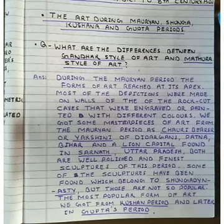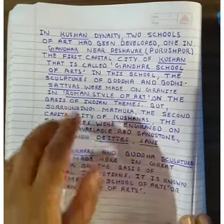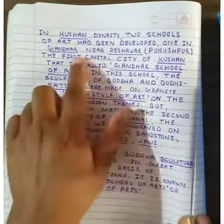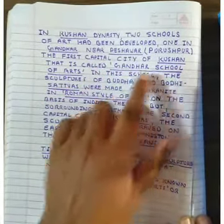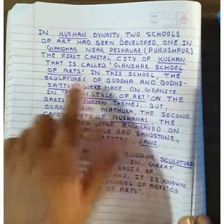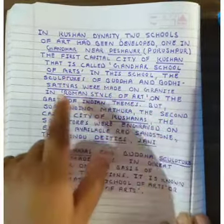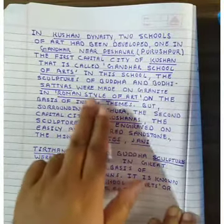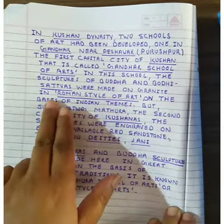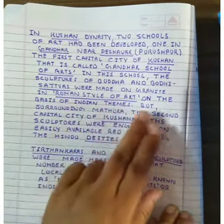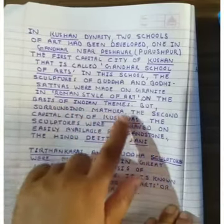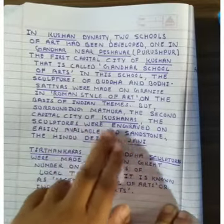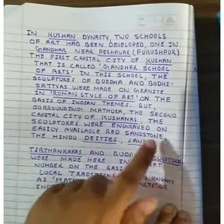During the Kushan dynasty, two schools of art developed. One was in Gandhara, near Peshawar, the first capital of the Kushans. This is called the Gandhara school of art. In this school, sculptures of Buddha and Bodhisattvas were made in granite in a Roman style of art, based on Indian themes.